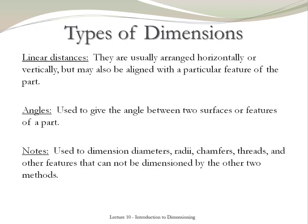These are some of the types of dimensions that you could use in a technical drawing. They could be linear distances, which can be horizontal, vertical, or aligned to a particular feature in the object. It could also be angles, to provide an angle between two lines or surfaces in a feature. In addition, a technical drawing can also have notes, which provide additional details about a feature.